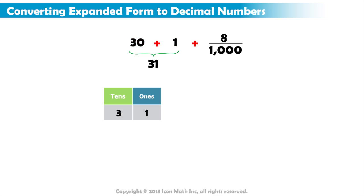And you can see we have a fraction. So we write a decimal point, because a fraction is represented in the decimal part.